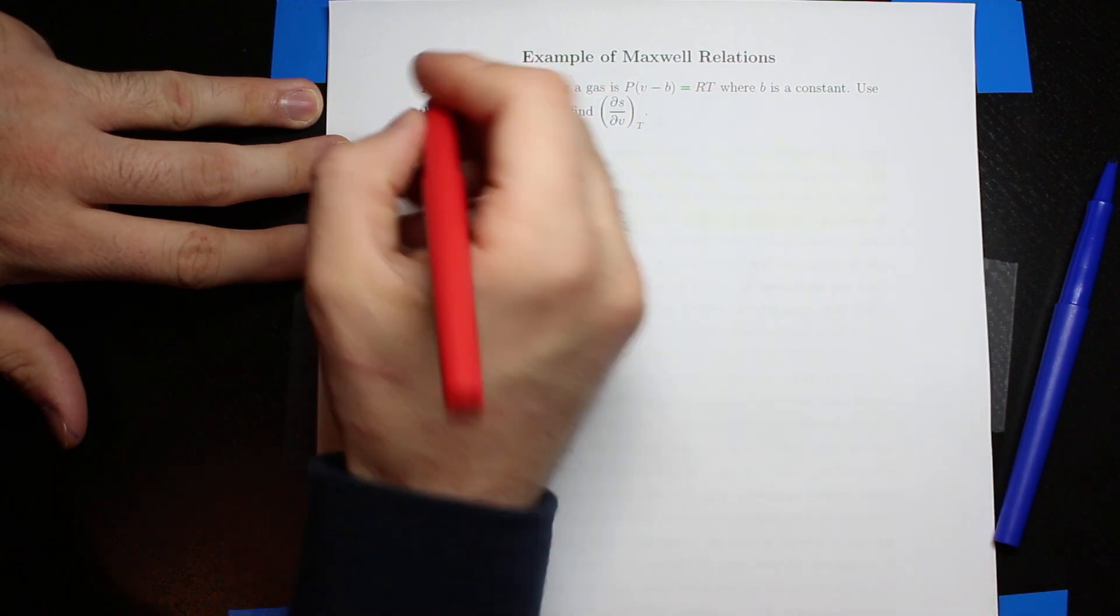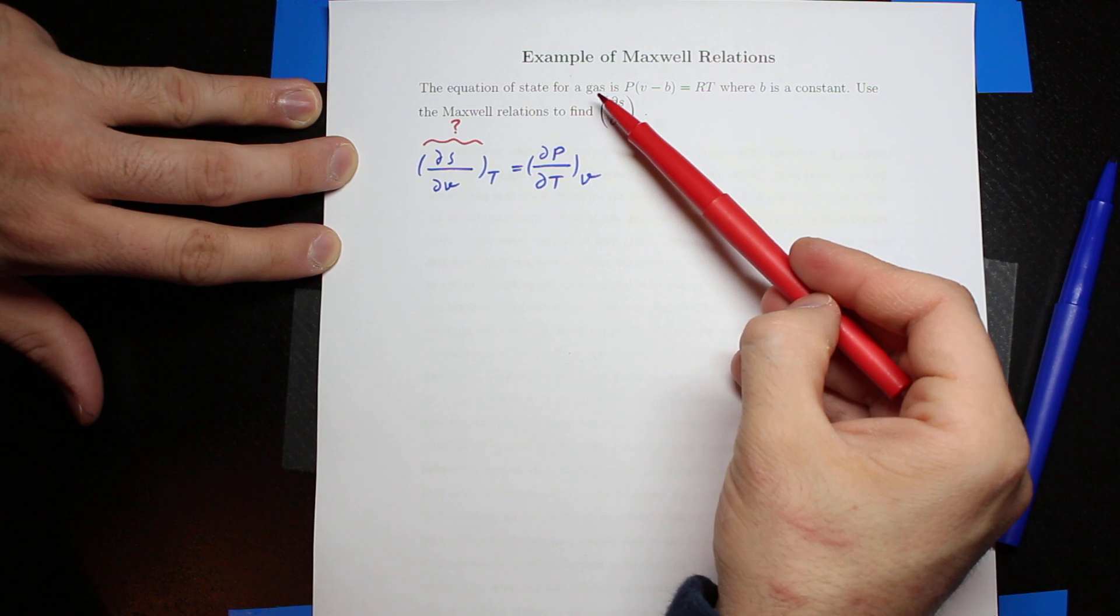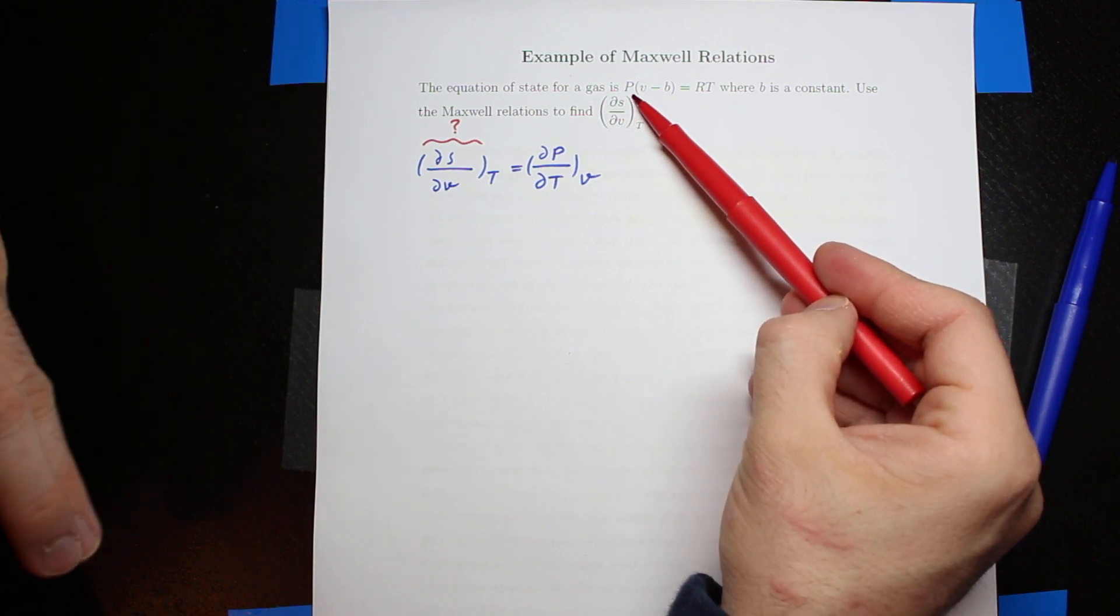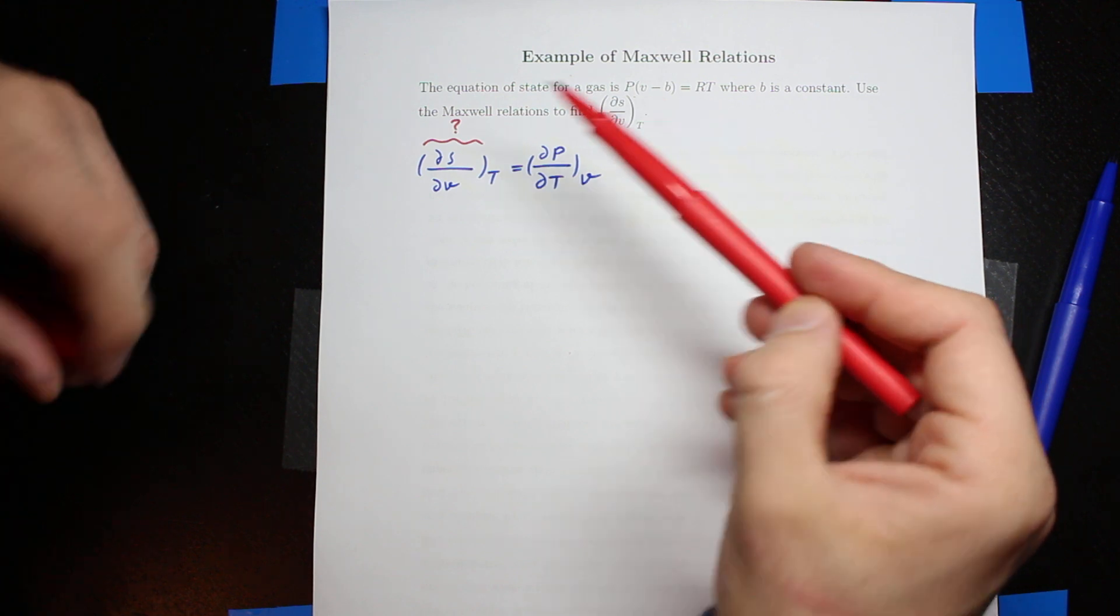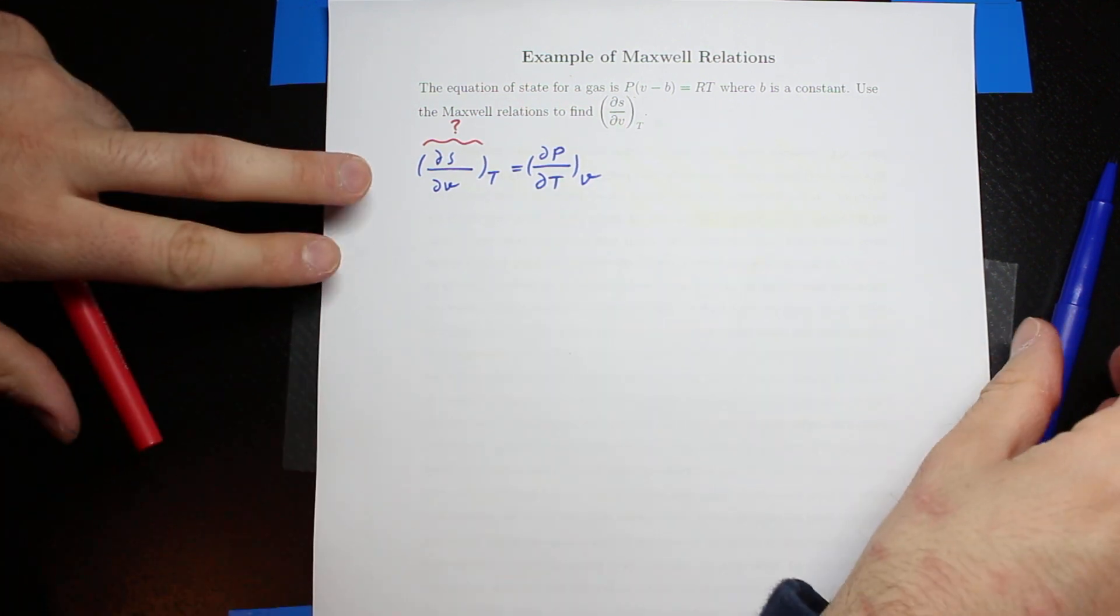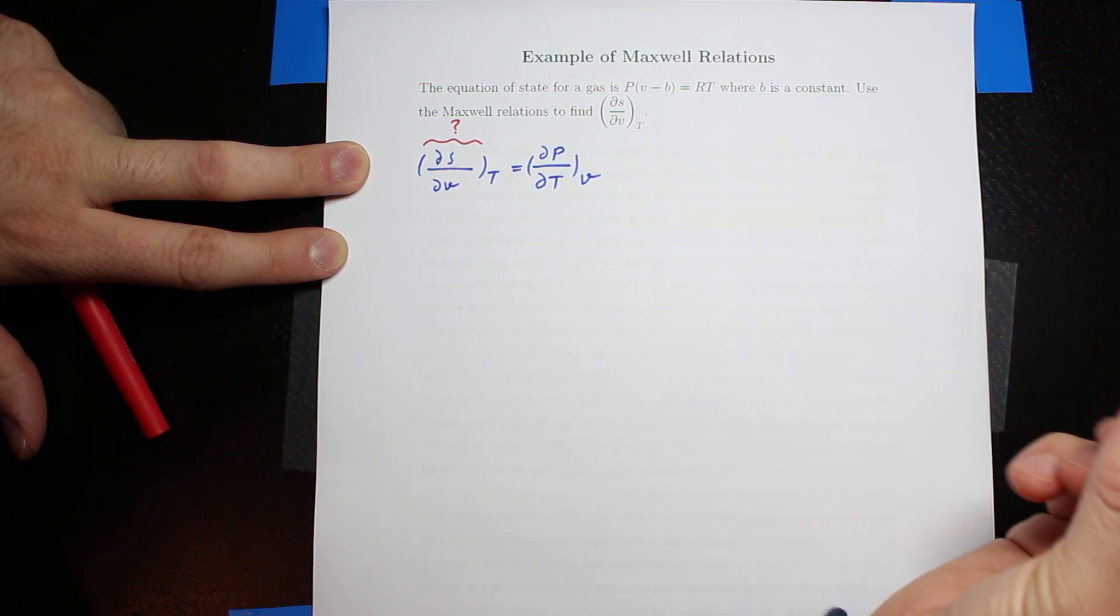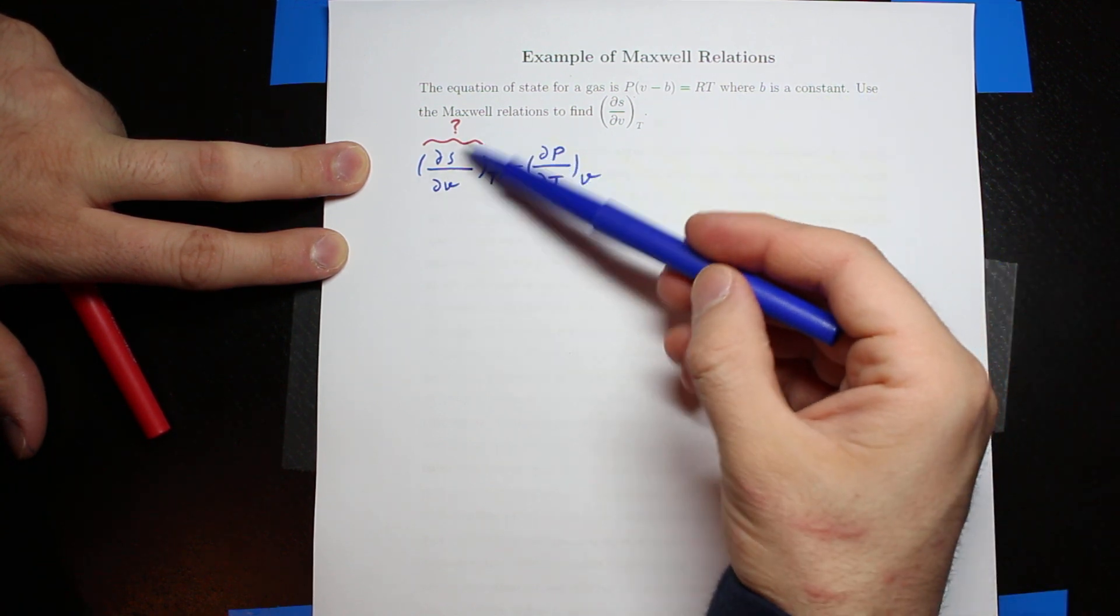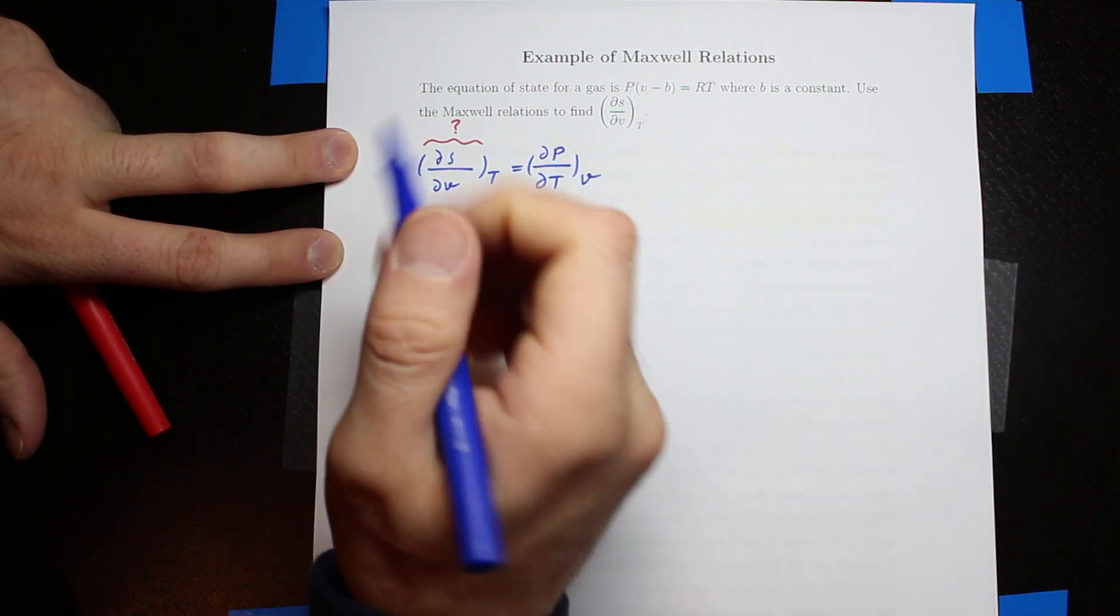Once again, we have a gas that is following this equation of state. The equation of state for the gas is given and B is a constant here. We want to find the left-hand side, so in order to find the left-hand side we want to utilize the right-hand side.